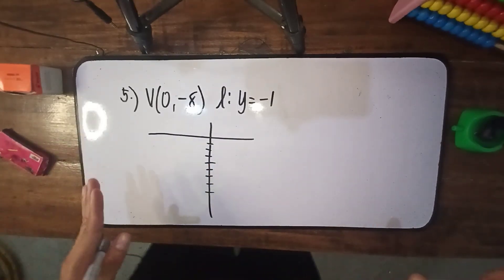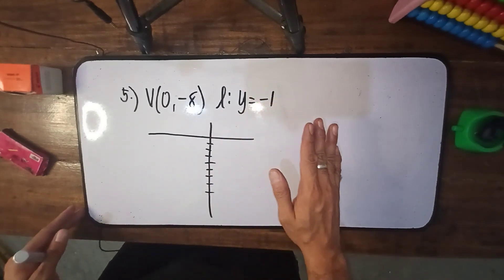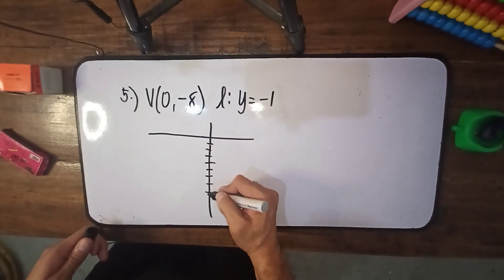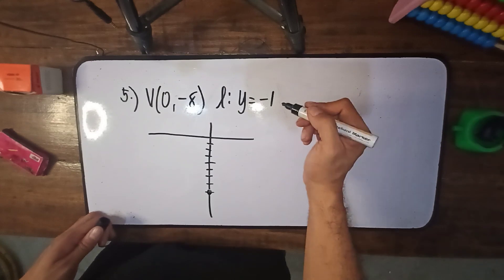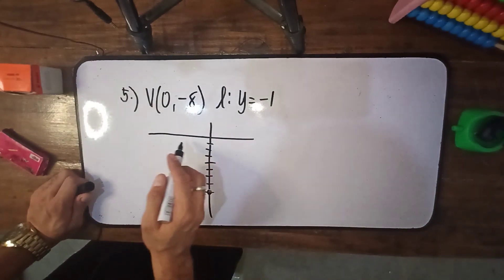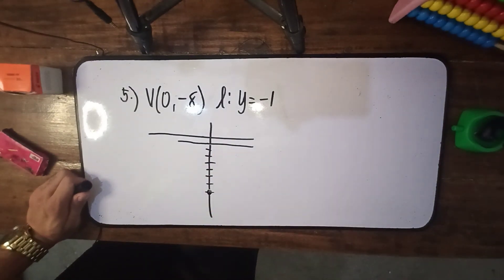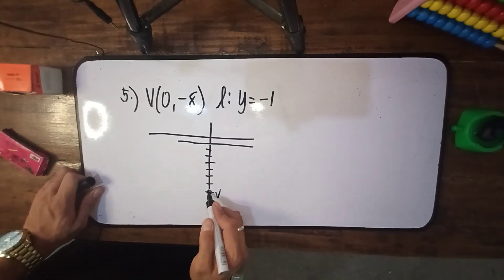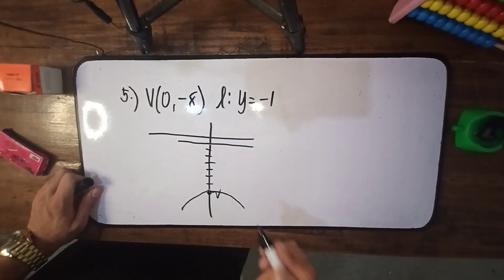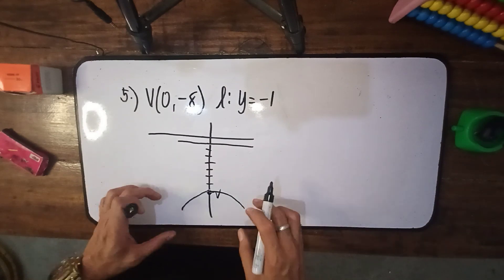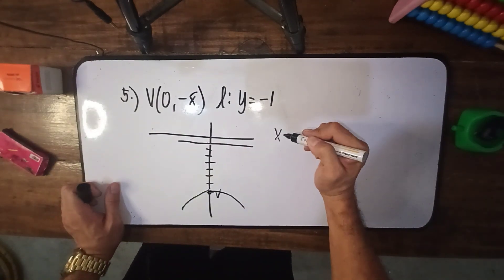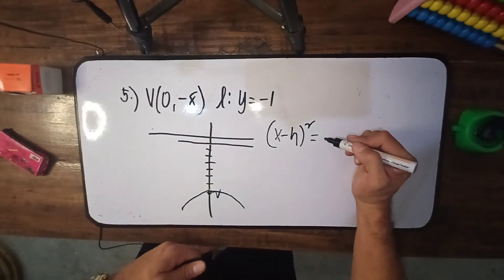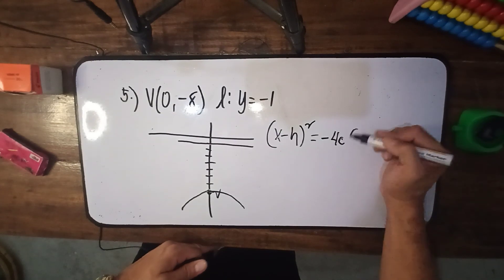The vertex is at 0 comma negative 8. The directrix is y equals negative 1. So i-visualize natin — ito yung ating vertex at ito yung ating directrix. Ang directrix nasa opposite side ng parabola. Therefore, it opens downward — ay, opens downward pala. Kung opens downward, ang directrix naka-horizontal. So gagamit tayo ng (x minus h) quantity squared equals, dahil opens downward, papunta sa negative infinity, gagamit tayo ng negative 4c times (y minus k).